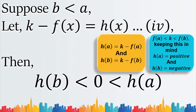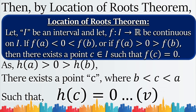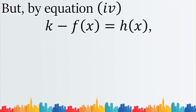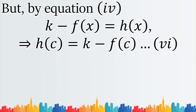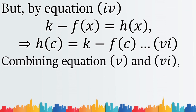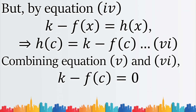We can observe that H(b) is less than zero which is less than H(a). Similarly, applying the Location of Roots Theorem, we conclude that H(C) equals zero — equation five. But by equation four, H(x) equals K minus F(x), so H(C) equals K minus F(C) — equation six. Combining equations five and six gives K minus F(C) equals zero, which implies F(C) equals K.